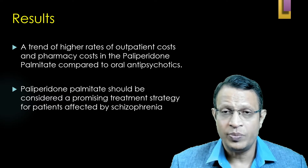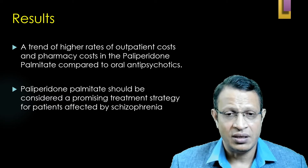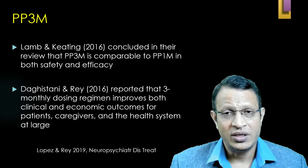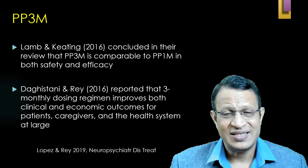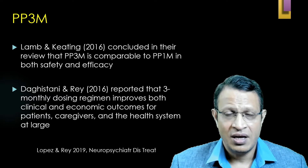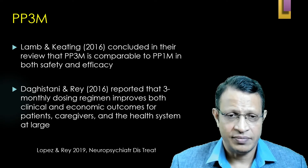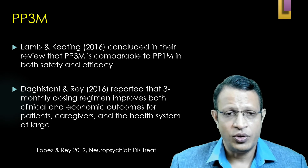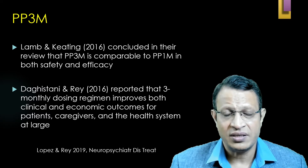The authors also suggested paliperidone palmitate should be considered a promising treatment strategy for patients with schizophrenia. With regard to the 3-month paliperidone formulation, there are no RCTs. However, a selective scoping review by Lamb and Keating in 2016 concluded that the 3-month paliperidone injection is equal in safety and efficacy to the monthly injection. A similar conclusion was made by Degasteen and Ray in 2016, who also reported that the 3-month dosing regimen improves both the clinical and economic burden for patients, caregivers, and the health system.